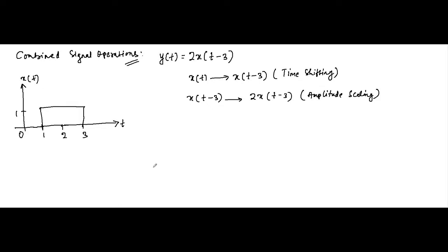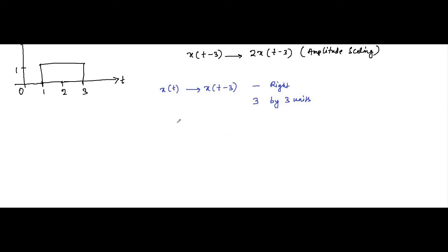The first operation to perform is time shifting: x(t) to x(t-3). As I have already discussed, whenever you see this minus sign, it means the signal will shift to the right by the value of the number mentioned. Here the minus sign means shifting to the right, and the number is 3, so the signal shifts to the right by three units.